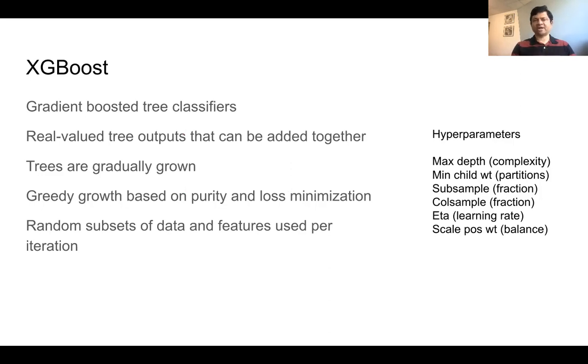With XGBoost, you take that one step further. These are gradient-boosted tree classifiers and the real-valued tree outputs can be added together to build higher-level structures. The trees are grown gradually, but in a greedy growth based on purity and loss minimization. You have a loss function and you try to minimize the loss as with any other machine learning. With the separations you're going to do, you try to have as pure samples as possible. Then you take random subsets of data and features used for iteration just like in random forests.